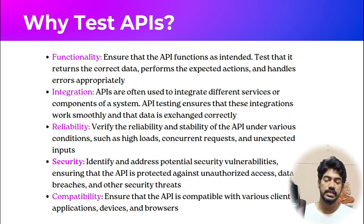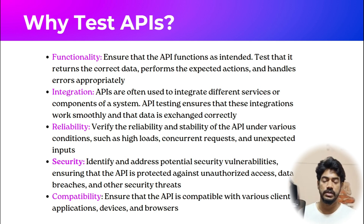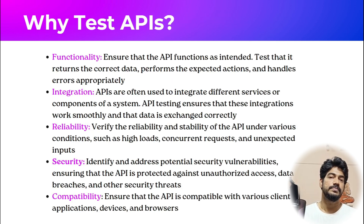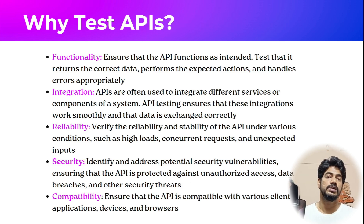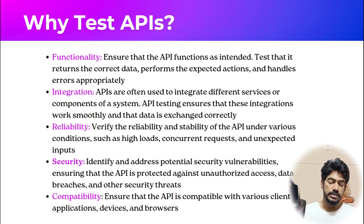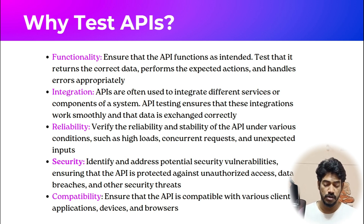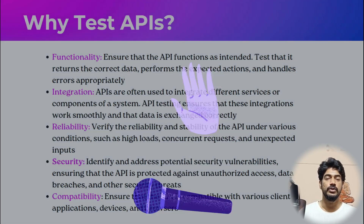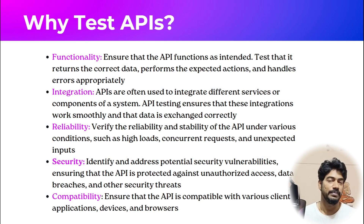Then compatibility. As mentioned, an API can interact with any system — any front-end to any front-end, any back-end to any front-end. In this scenario, we have to do compatibility testing: ensuring it works across any browsers, any devices, and other things as well. So in this video, we have learned what an API is, where we use APIs, and why we should test them. If you have any queries, feel free to ask in the comments — I'll be happy to reply. See you in the next one very soon. Take care!